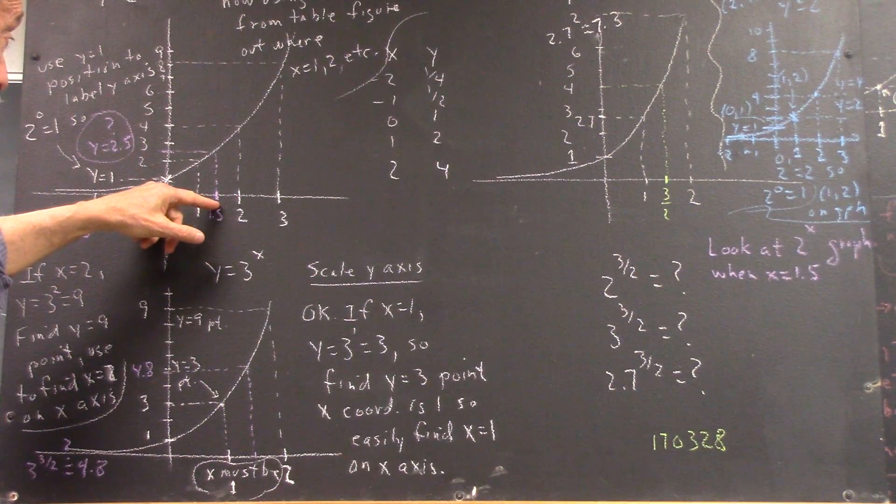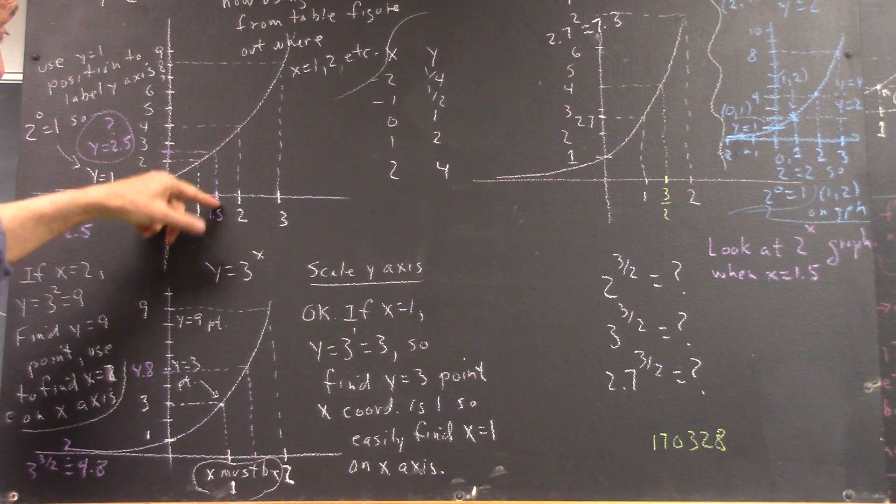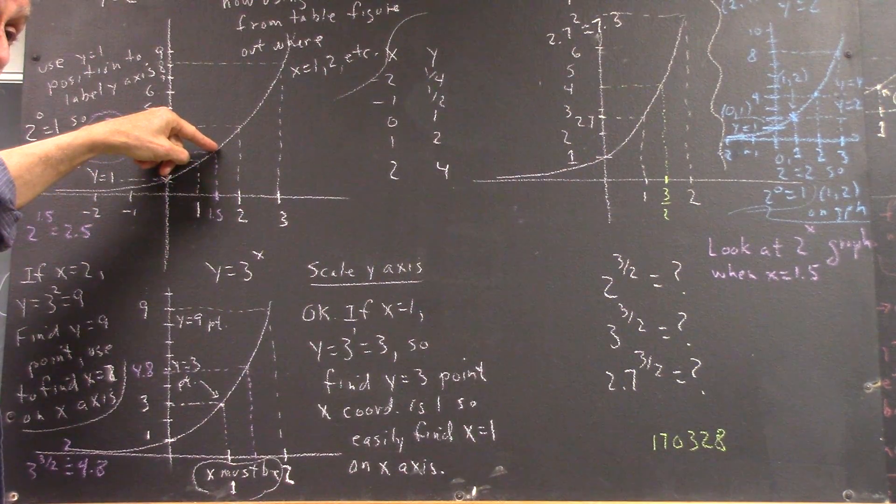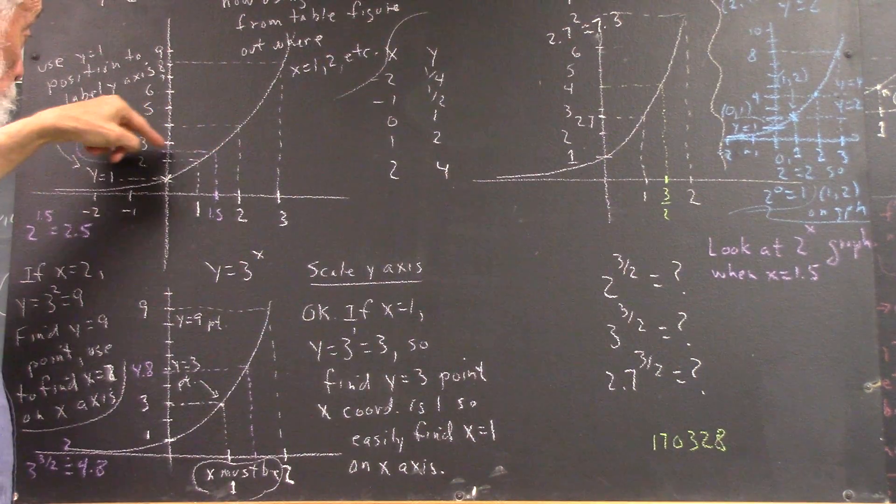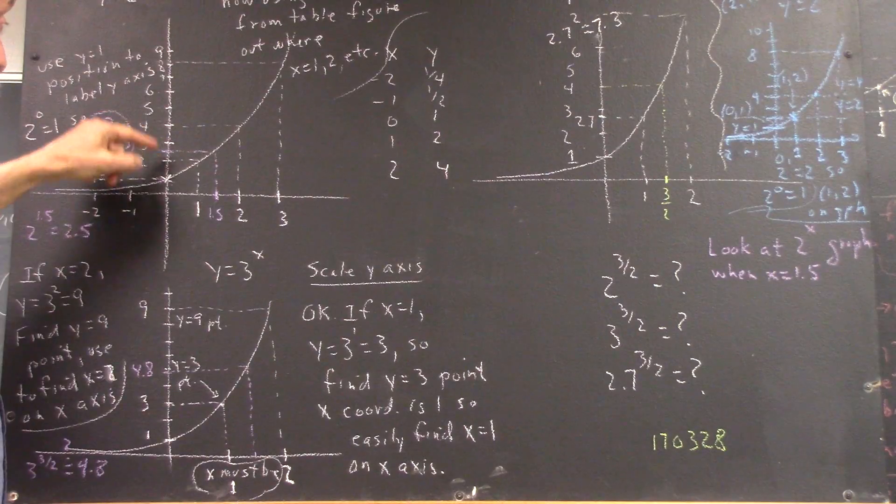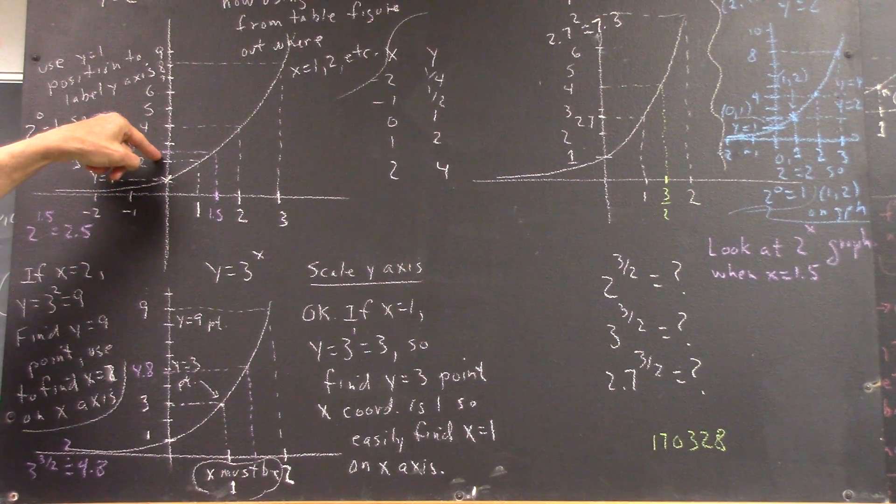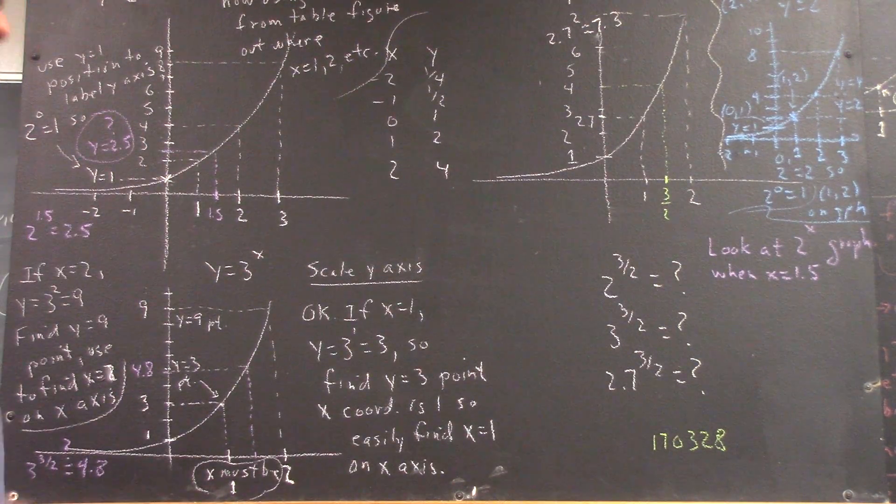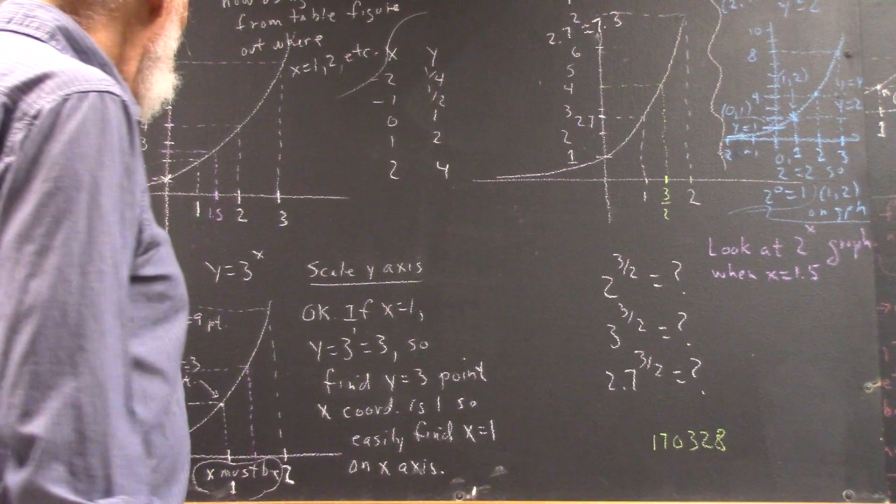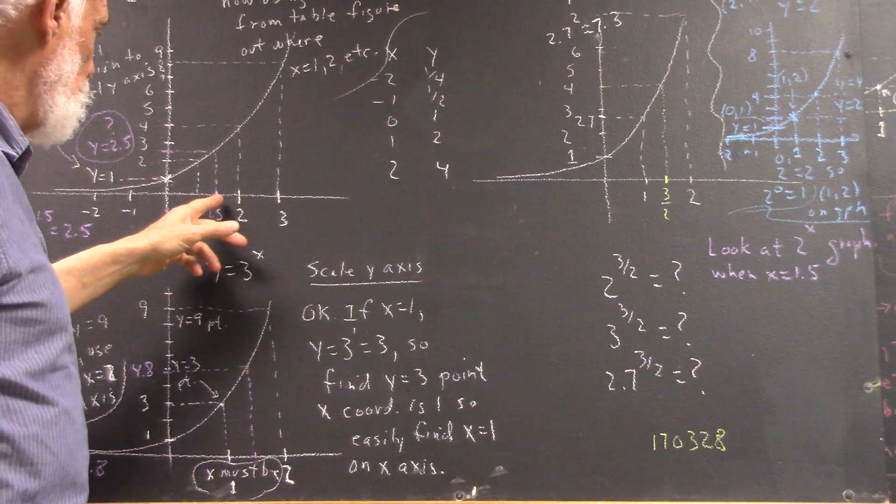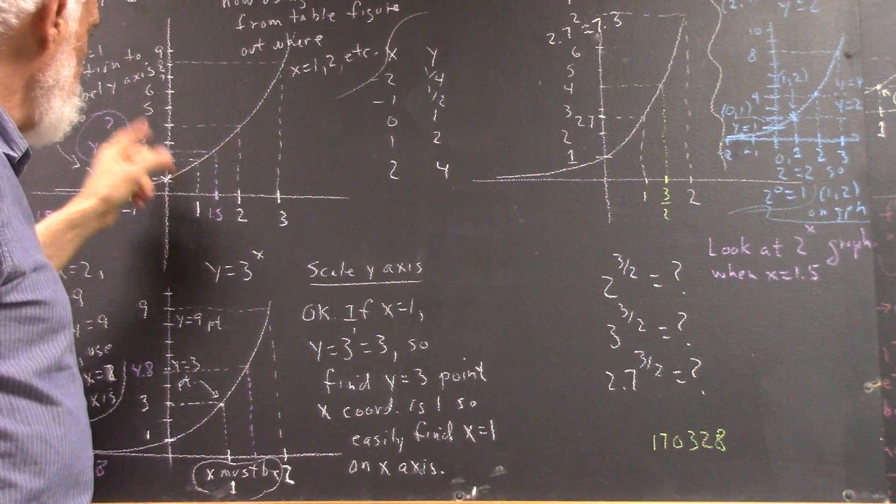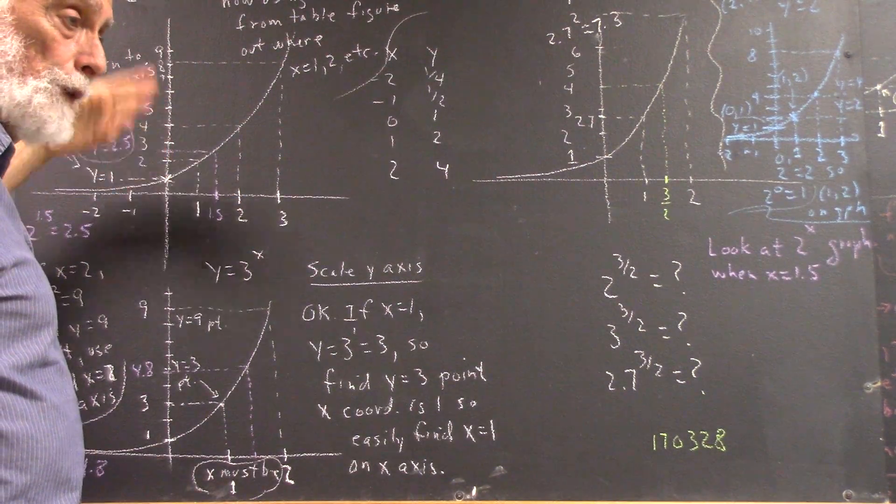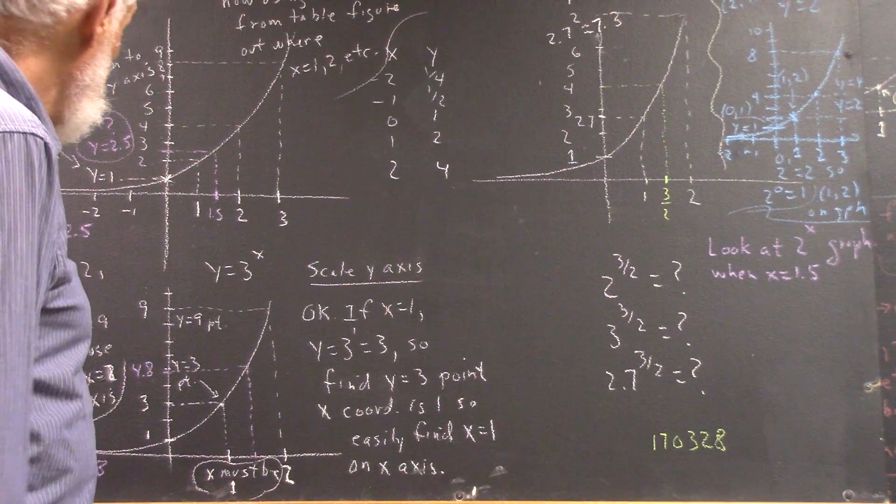But when x is 1.5, what is the value of y? What's the point of the graph when x equals 1.5? Well, we come over to the y-axis from this point, and we find it looks like it's pretty darn close to 2.5, doesn't it? Now I know better. I know it's a little higher than that. And I also know that that actually didn't quite put this in the middle. It should have been a little further to the right, which would have made this point a little bit higher. And it might have been 2.6, 2.7, maybe even 2.8.